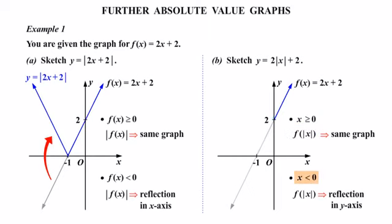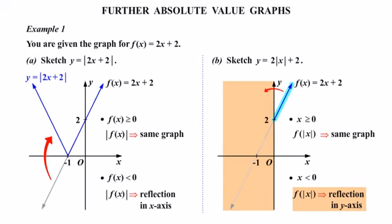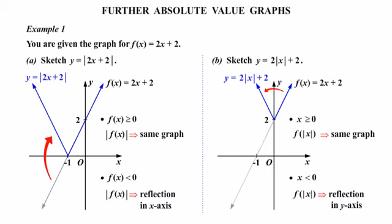Now the second condition: where x is less than 0 — that's this whole region of the graph here — f(|x|) gives us a reflection in the y-axis. We need to be careful because we're taking the part we've just drawn and flipping or reflecting that across the y-axis, which is slightly different to the method in part A. We draw that in, and there's our completed graph. So y = 2|x| + 2.